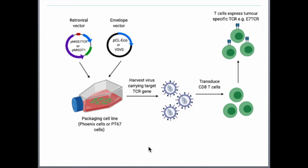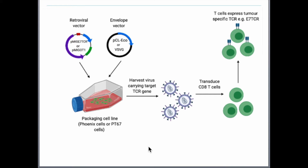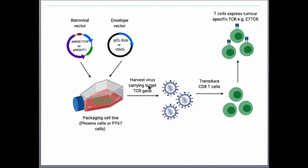This diagram is an overview of what my research project is about. We've used two types of vectors and performed transfection then transduction. The diagram was created using an online website called Biorender — I do recommend using Biorender to create diagrams for dissertations, essays, or posters. As you can see, I've used two types of vectors: the retroviral vector and the envelope vector.